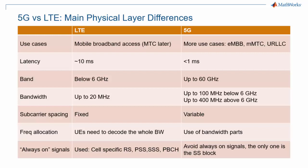Carrier frequencies for 5G can be as high as 60 or 70 GHz, where LTE is only deployed below 6 GHz. This has significant consequences on the design of the physical layer, as beamforming becomes required to support those higher frequencies. At those higher frequencies, more spectrum is available, and 5G NR is set to take advantage of its spectrum with up to 400 MHz of bandwidth, and possibly more later.